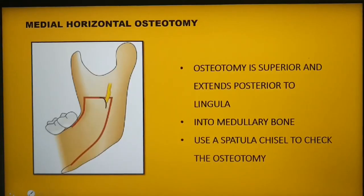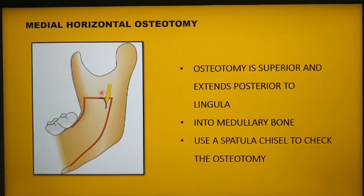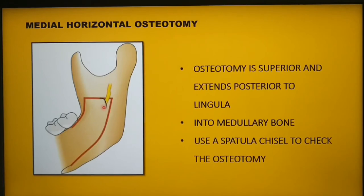The medial horizontal osteotomy is performed first using a reciprocating saw or burr inclined at 45 degrees to the bone surface. The bone cut should extend superior to and posterior to the lingula — about two-thirds the anterior-posterior dimension of the ramus. The cut must extend into the medullary bone, not just remain within the cortical bone, and should be parallel to the occlusal plane.